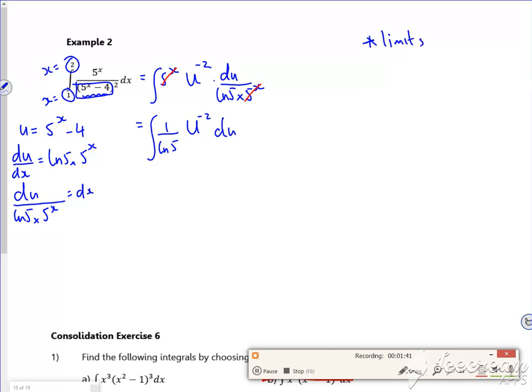So my limits, so when x is 1, u is 5 to the 1 minus 4, which is just 1. When x is 2, u is 5 squared minus 4, which is 21.